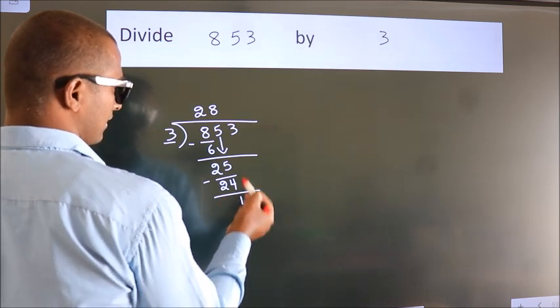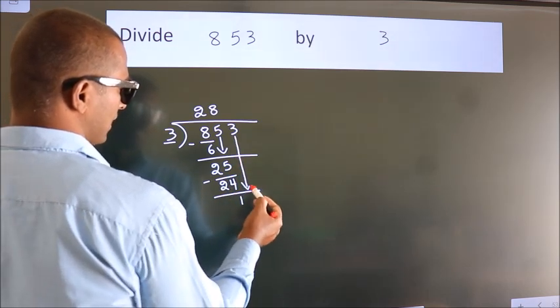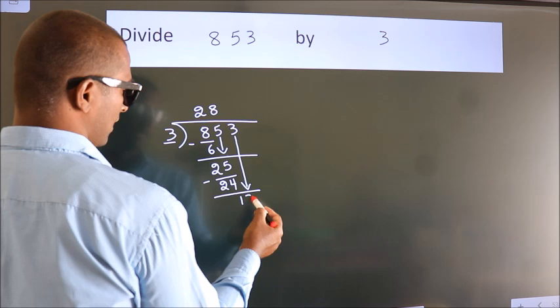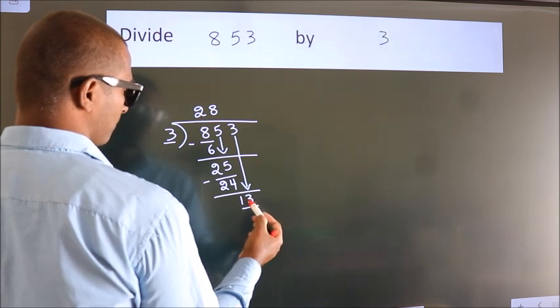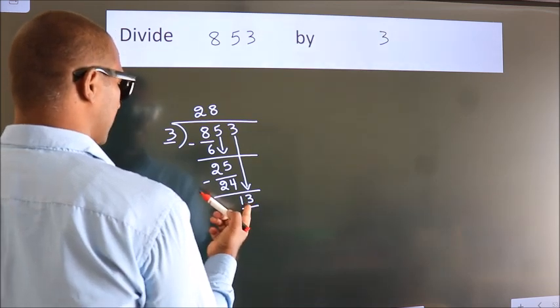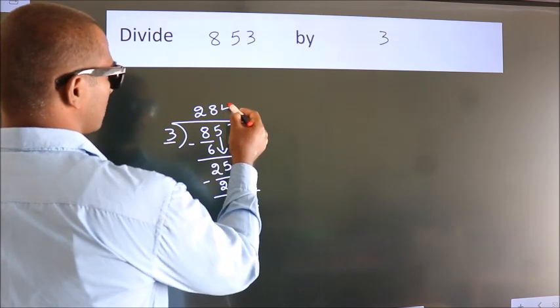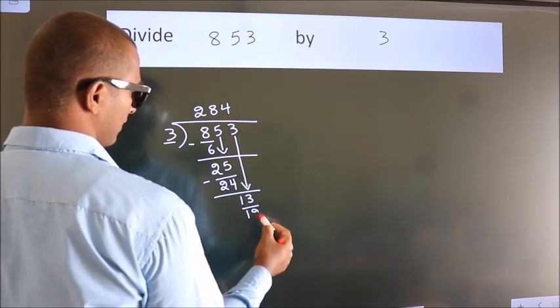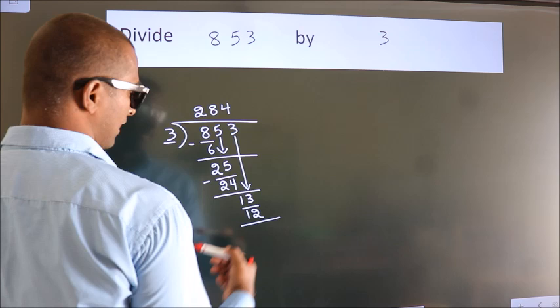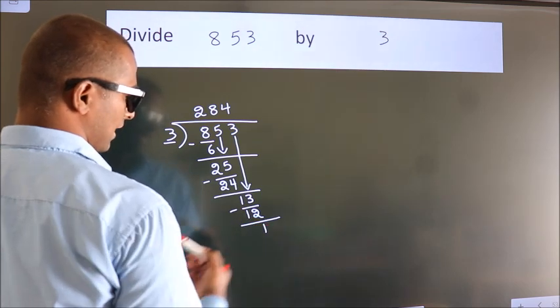After this bring down the beside number. So 3 down. So 13. A number close to 13 in 3 table is 3 times 4 is 12. Now we subtract. We get 1.